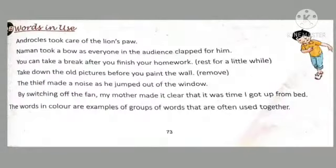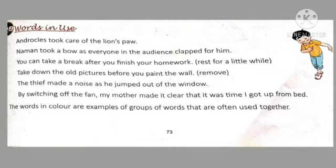Hello children, this is Class 3 English revision of Chapter 10 - Words in Use. Here you will see some groups of words that are often used together, like 'took care,' 'took bow,' 'take a break,' 'take down,' 'made it clear,' etc. They are known as phrasal verbs — a combination of two or three words that come together with a special meaning. For example, 'took care' means to look after anyone, and 'took bow' means to salute anyone by bending the body and head.